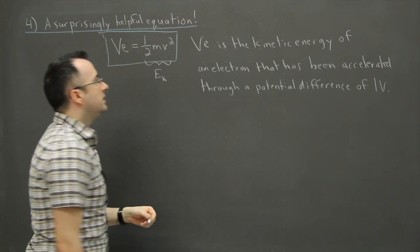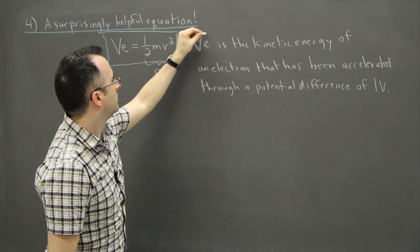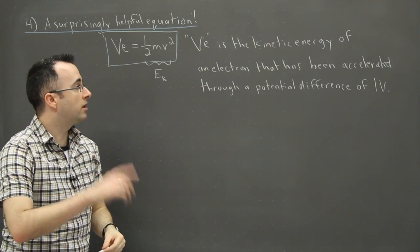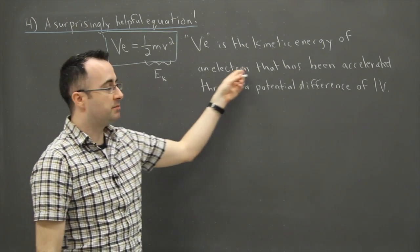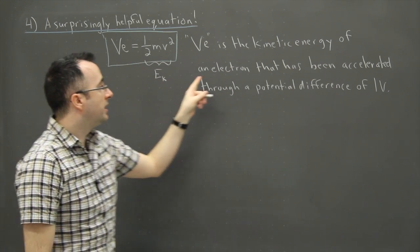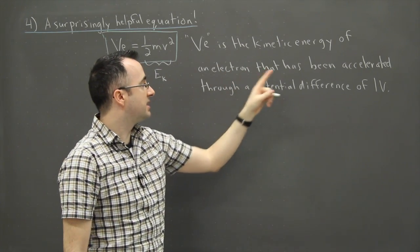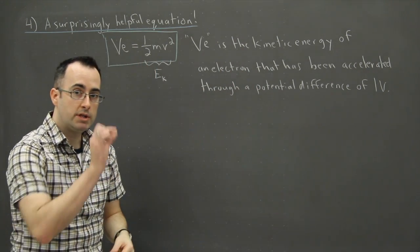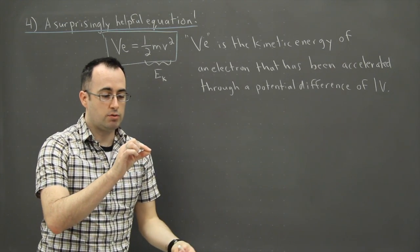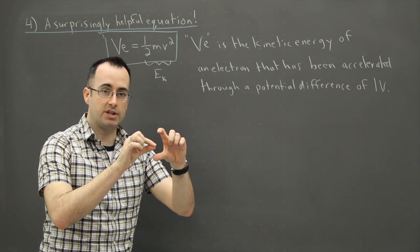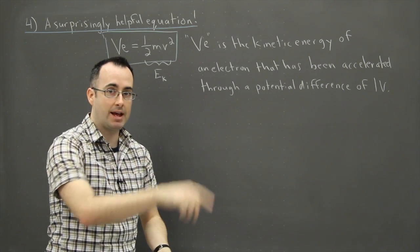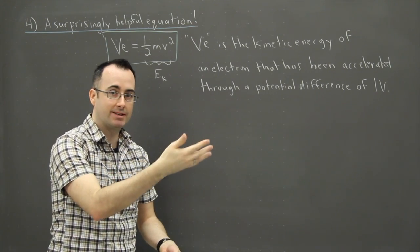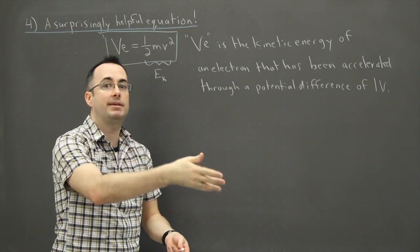All right, so VE. Well, that's the kinetic energy of an electron. It actually doesn't even have to be an electron, it could be any charged particle. But an electron, for example, that's been accelerated through a potential difference of one volt, which means you take a little electron and you send it through some potential difference. And that's going to accelerate that electron. It's going to zip along. It's going to be accelerated. It's going to go from a certain speed to a much faster speed.